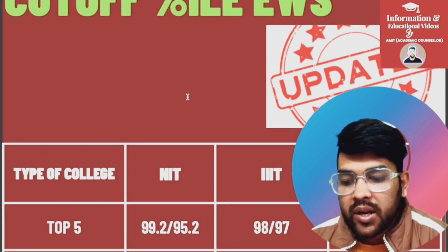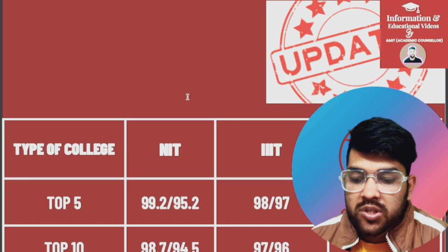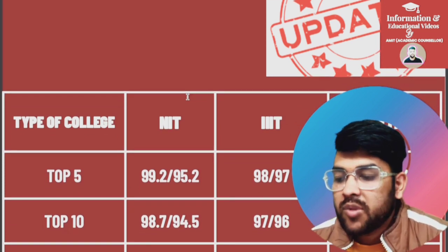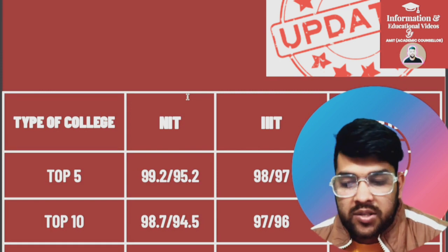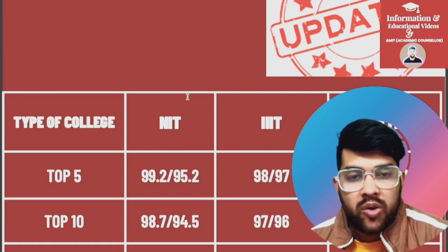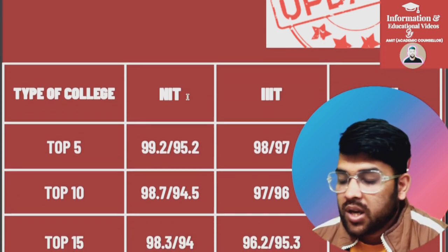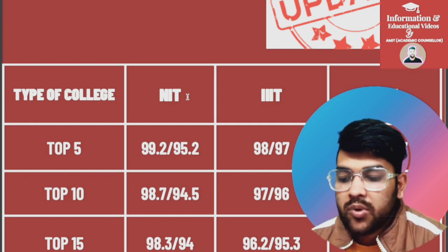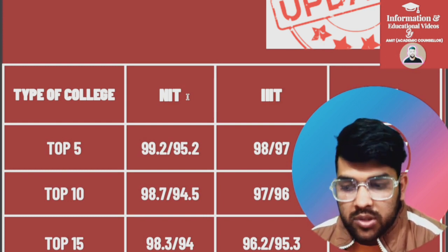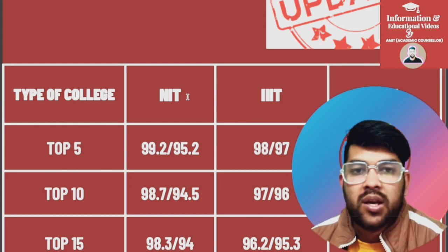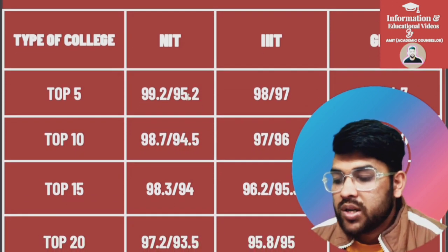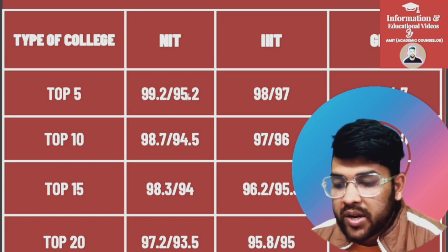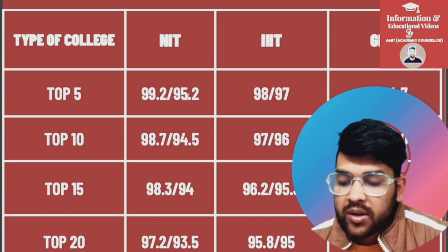For Triple IT it is 98 and 97; for GFTI it is 96 and 94.7. For top 10 NITs: 98.7 and 94.5; for Triple IT: 97 and 96; for GFTI: 93.4 and 90 percentile. For top 15 NITs: 98.3 and 94; for Triple IT: 96.2 and 95.3; for GFTI: 93.8 and 89 percentile.